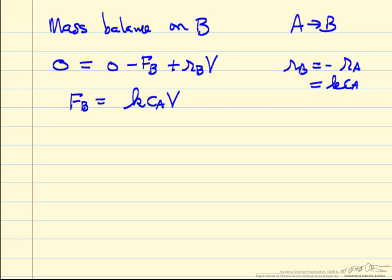And so flow rate of B is the rate constant, concentration of A, the reactor volume, and then we can do some simplifications.